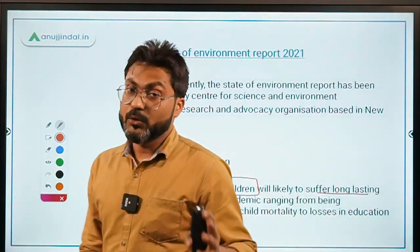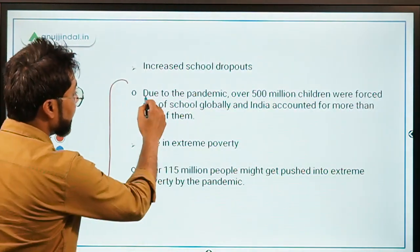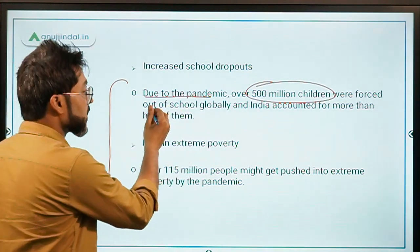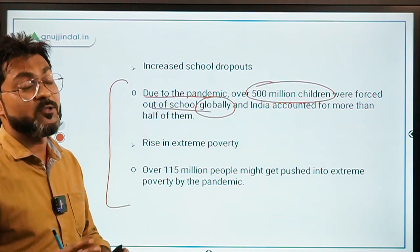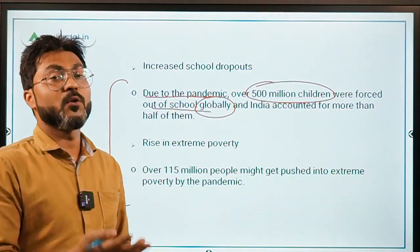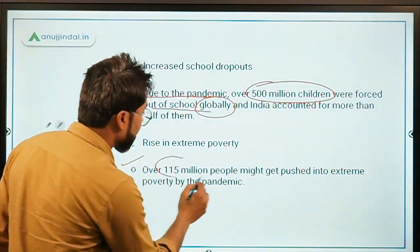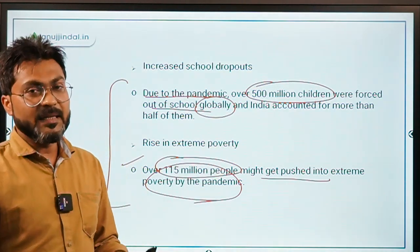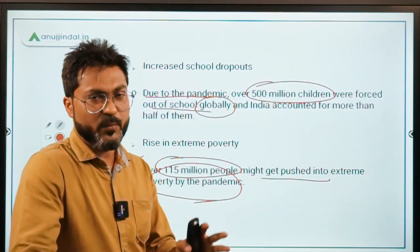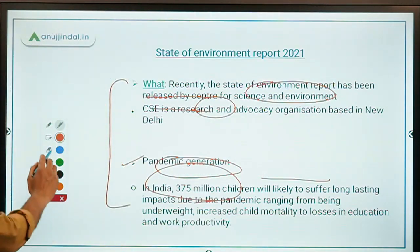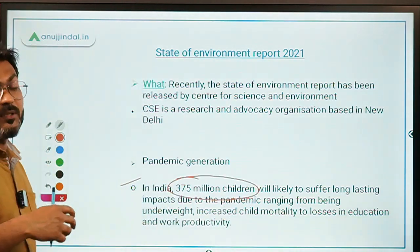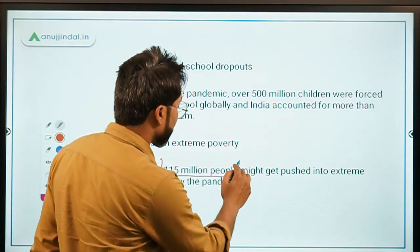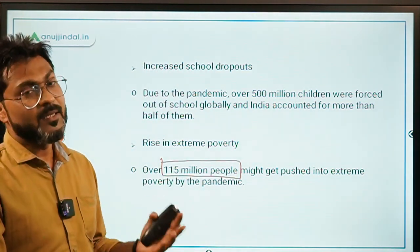This is very alarming. The report also says that due to the pandemic, over 500 million children globally will be forced out of school. Additionally, over 115 million people might get pushed into extreme poverty by this coronavirus pandemic. These are the three most important points to remember from this report for exam purposes.